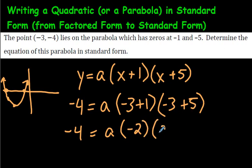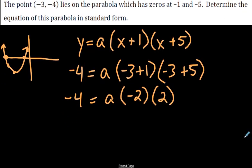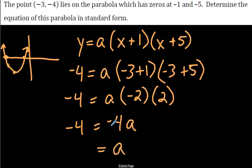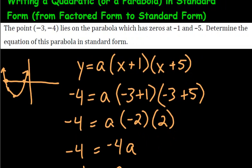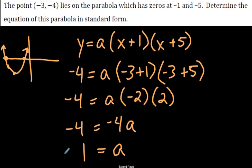Negative 3 plus 1 is negative 2, and negative 3 plus 5 is positive 2. So negative 4 = a times negative 2 times positive 2, which equals negative 4a. Dividing both sides by negative 4 gives a = 1. It's positive, which makes sense since the parabola opens upward.